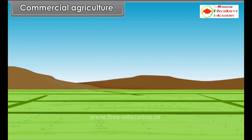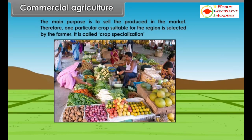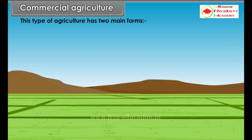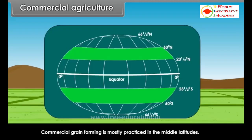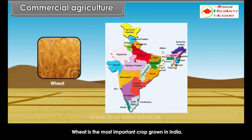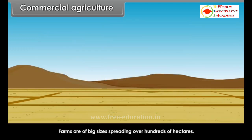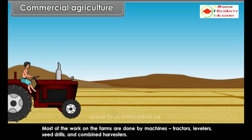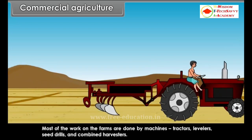Commercial agriculture's main purpose is to sell the produce in the market. One particular crop suitable for the region is selected by the farmer — this is called crop specialization. This type of agriculture has two main forms: commercial grain farming and plantation agriculture. Commercial grain farming is mostly practiced in the middle latitudes, in sparsely or moderately populated parts of the world. Wheat is the most important crop grown. Farms are of big sizes spreading over hundreds of hectares, and most work is done by machines — tractors, levelers, seed drills and combined harvesters.